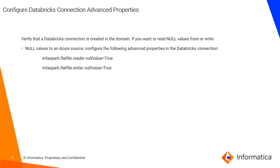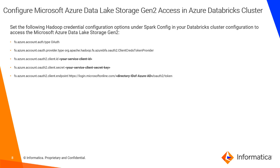If you want to read or write null values, you have to set these two properties under the Databricks advanced properties. The first is: infa.flat.file.reader.null.values equals 2. The second is: data.null.values equals 2. To set the Hadoop credential configuration options under the Spark config in the Databricks cluster to access Microsoft ADLS Gen2.